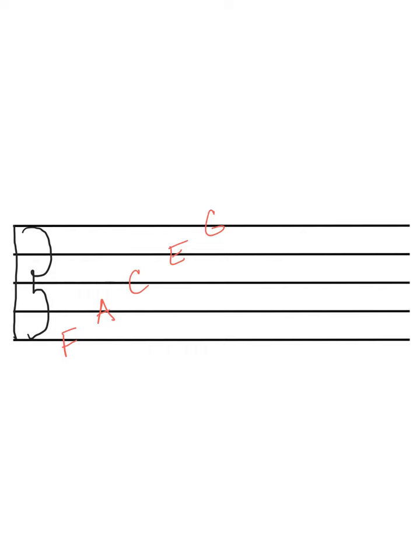So you can come up with a sentence to help you remember those lines, but most viola players just remember FACE G to remember the lines from bottom to top.